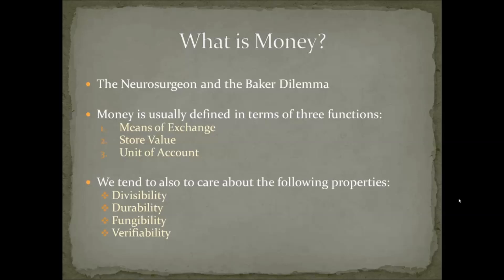There are a couple of other properties we care about in money. First is divisibility: when I have a dollar, it would be nice to break it into smaller parts. I wouldn't want to pay a full dollar for a gumball, so I pay a quarter or a dime instead. Divisibility is a necessary property of money. Durability is another: in paper-based currencies durability is measured in years, while metal-based currencies like coins can last decades or even centuries. Some currencies like Roman and Greek coins have been around for thousands of years, showing that durability is a prerequisite for good money.